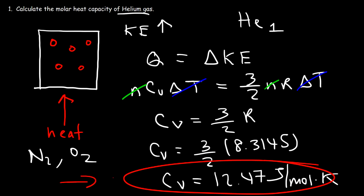For any monoatomic gas like helium or even neon, the molar heat capacity is going to be this same value — 12.47 J/mol·K. It might vary slightly, but for the most part that's the answer.